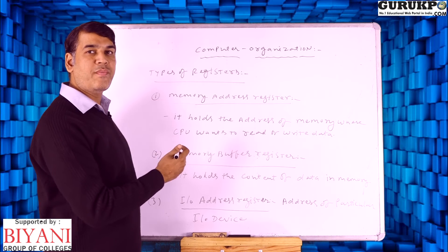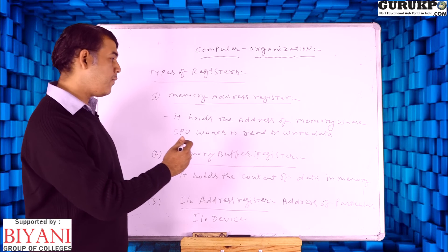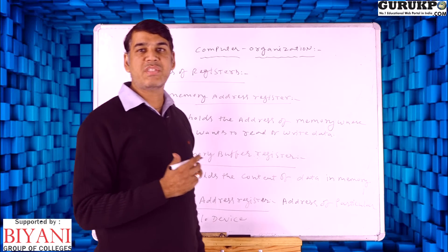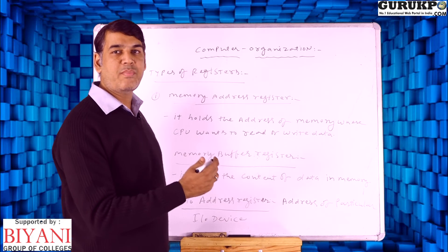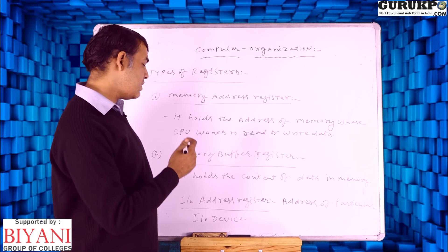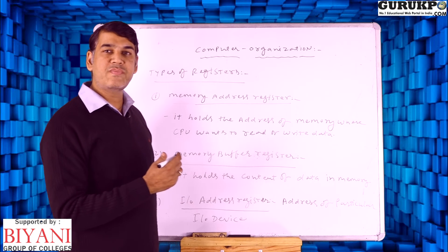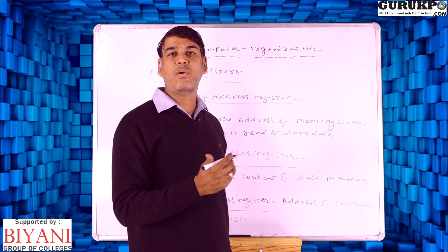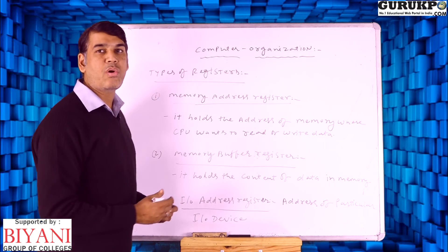The second register is called the memory buffer register. In the memory buffer register, we hold the content of data in memory — we focus on what kind of data we are using in the memory. The third type of register is called the IO register. In the IO register, we have the address of particular IO devices. We have many input and output devices, and their particular addresses are explained by this type of register.